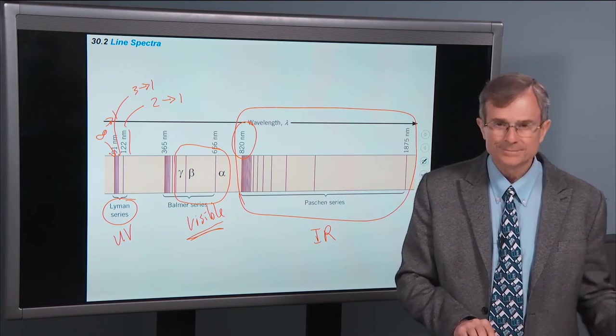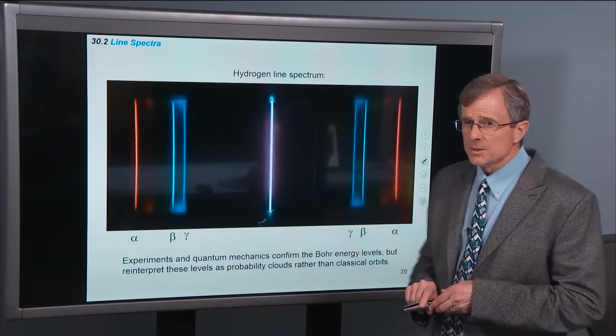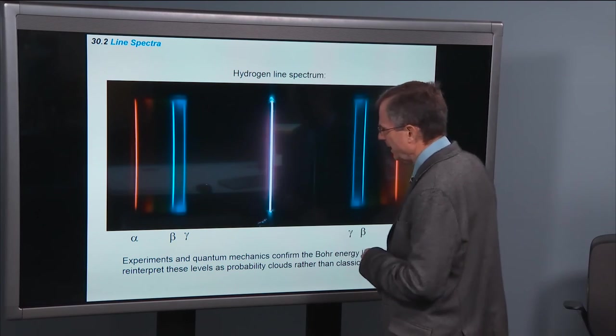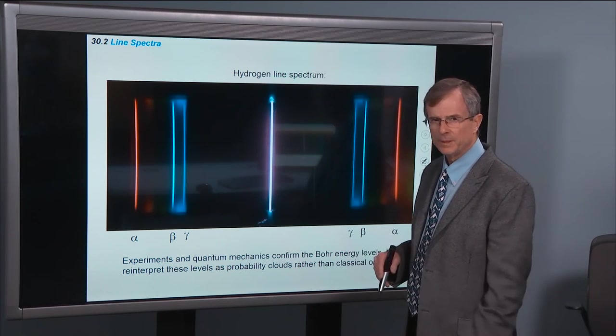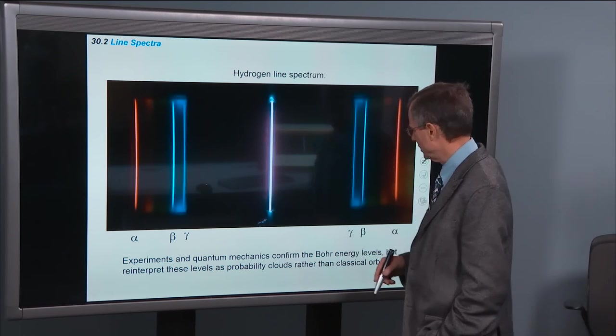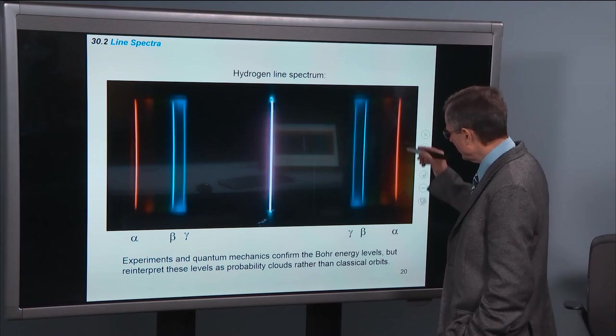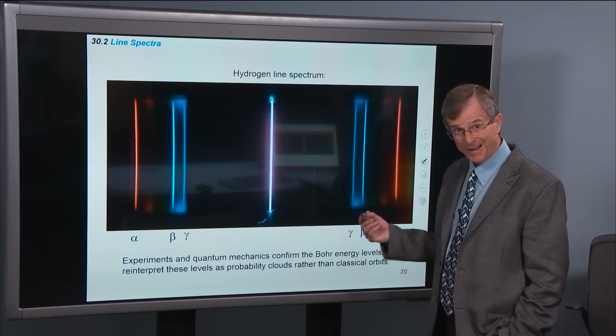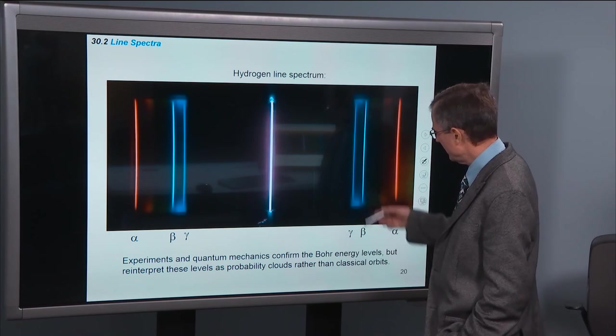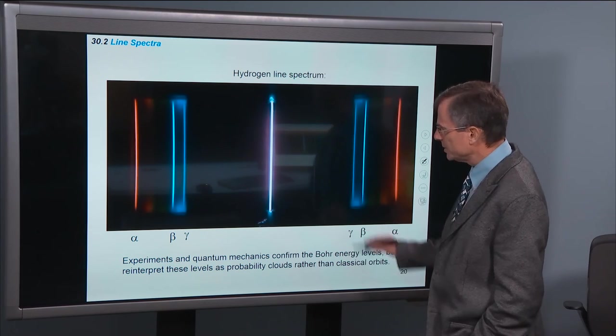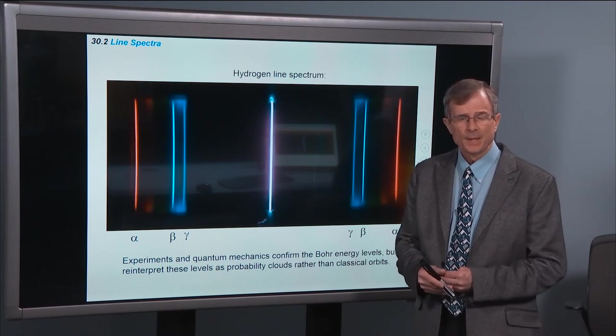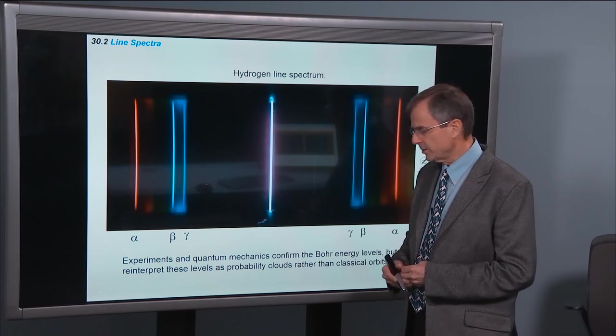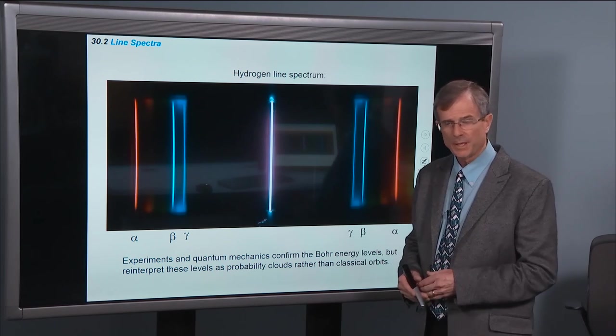So this, once again, is a screenshot from the demo video that we showed earlier, showing the alpha red line, beta aqua line, and gamma blue lines. You'll see these very same lines in the lab, where you talk about diffraction, and diffraction gratings, which allow you to get a spectrum.